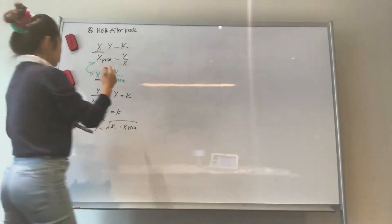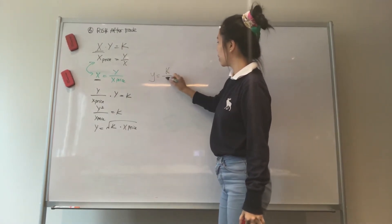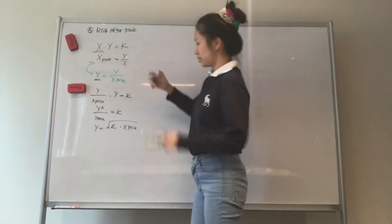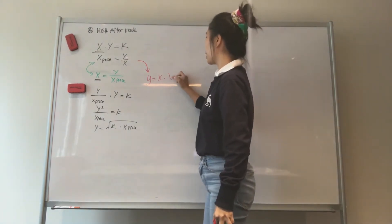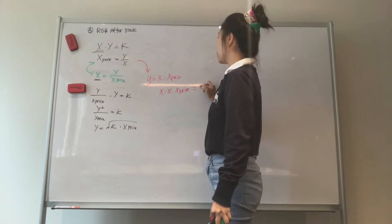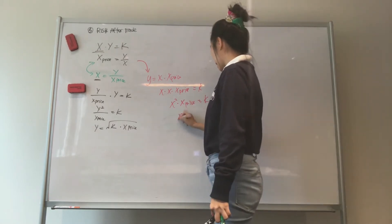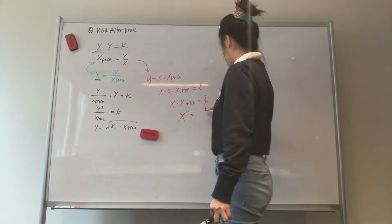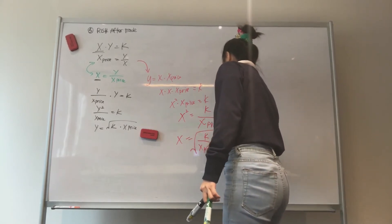Now let's look at the value of x. So what we've done here is to price the items in x. Now let's price it in y. So y equals k over x. So you get y equals x multiplied by x price. So if you multiply this, it's x multiplied by x. You get k. So you have x squared times x price equals k, and that means x squared equals k over x price. And x equals root k over x price.